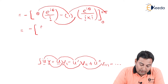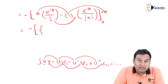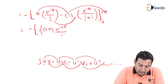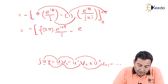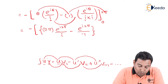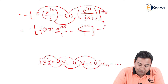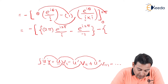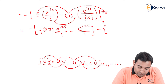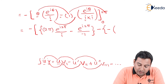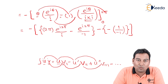Substituting the limits: for the upper limit θ = 2π, the expression gives 2π · e^(2πi)/i − e^(2πi)/i². For the lower limit θ = 0, the first term is 0 (since θ = 0 is multiplied), and the second term gives e⁰/i² = 1/(−1) = −1. So the full result is −[(2π · e^(2πi)/i − e^(2πi)/i²) − (0 − 1/(i²))].